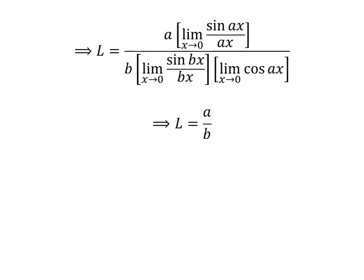So, the above statements give us L is equal to a upon b. Therefore, the limit of tangent of a times x upon sine of b times x as x approaches 0 is equal to a upon b.